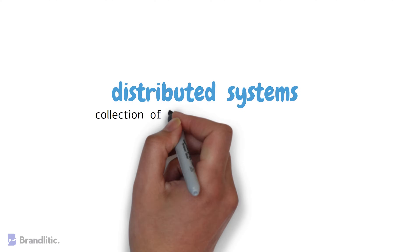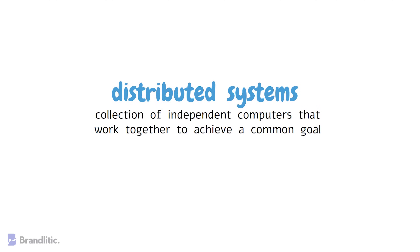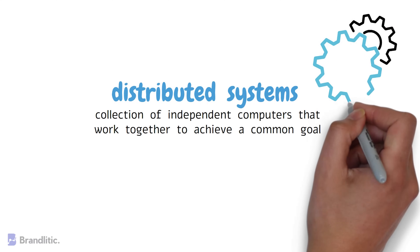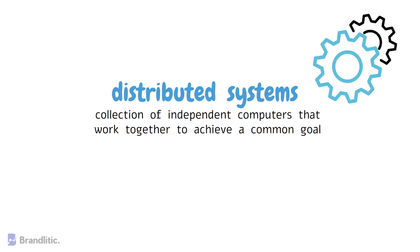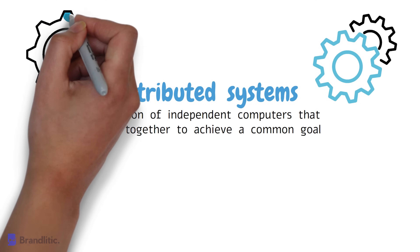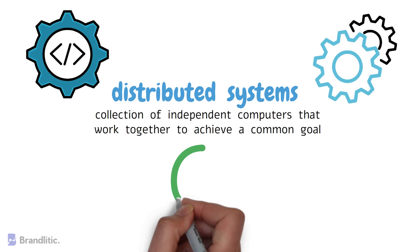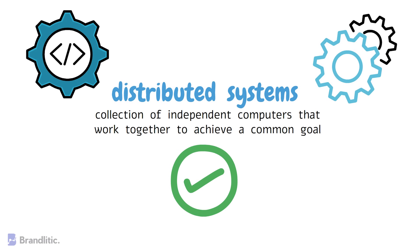A distributed system is a collection of independent computers that work together to achieve a common goal. In contrast to a single computer, a distributed system can handle more significant workloads and provide redundancy and fault tolerance features. However, distributed systems pose unique challenges, including how to ensure that all nodes agree on the same result.